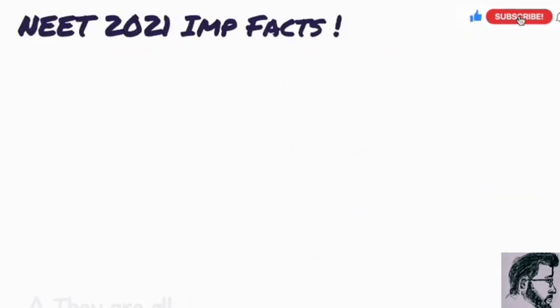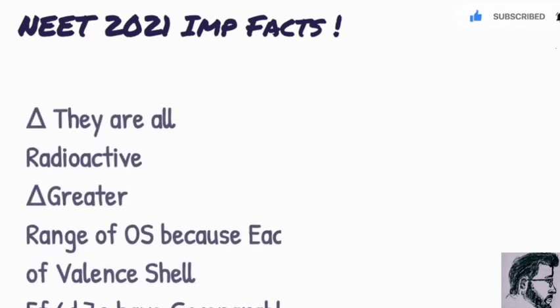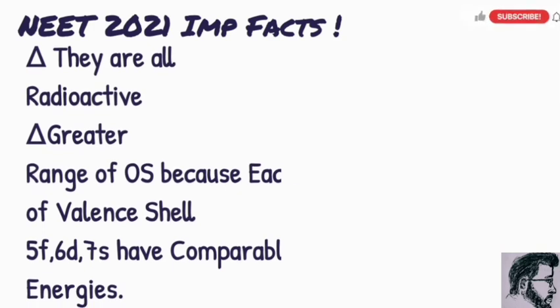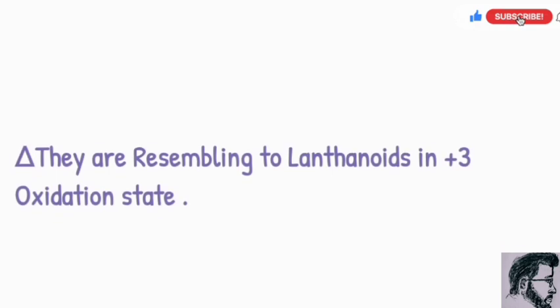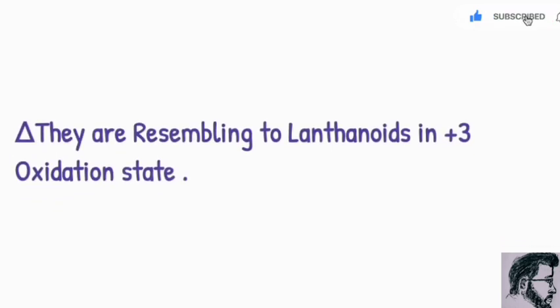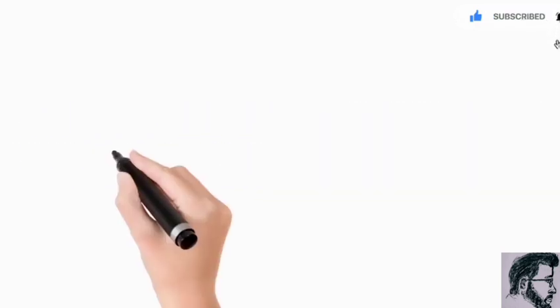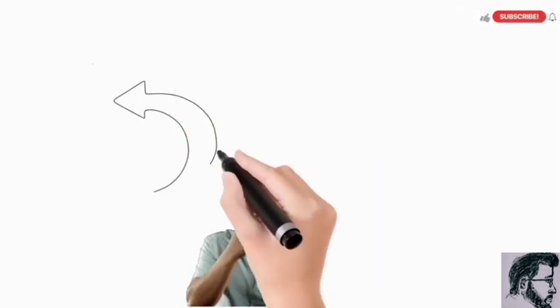Regarding important factors from actinoids: all members of actinoids are radioactive. After that, they show a greater and wider range of oxidation states, because in the outermost shell, the orbitals have comparable energies, so any one of them can donate electrons. They also resemble lanthanoids in the +3 oxidation state.